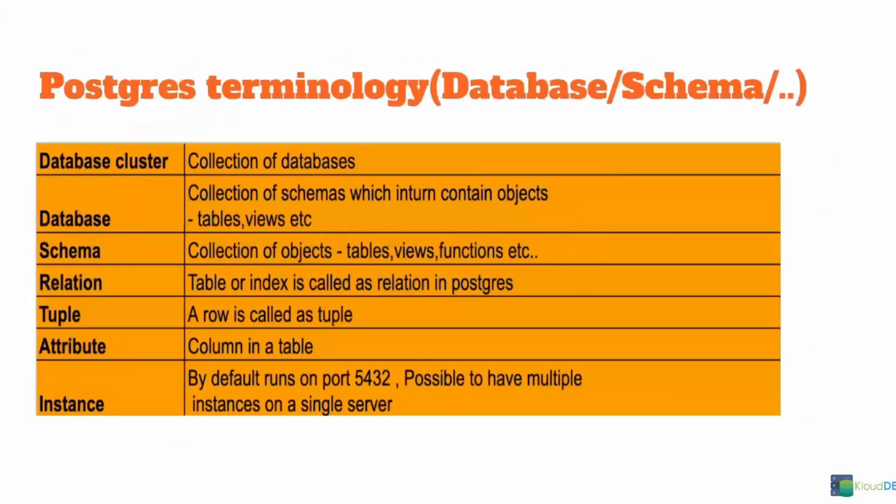In Postgres terminology, the database cluster means a collection of databases. A database is a collection of schemas, which in turn have tables and views, etc. A schema is a collection of objects which can have multiple tables, views, functions, etc. The word relation in Postgres typically means table or index, which can be confusing if you come from a different RDBMS background. A tuple refers to a row, an attribute refers to a column or field in a table, and an instance by default runs on port 5432. It is possible to have multiple instances on a single server.